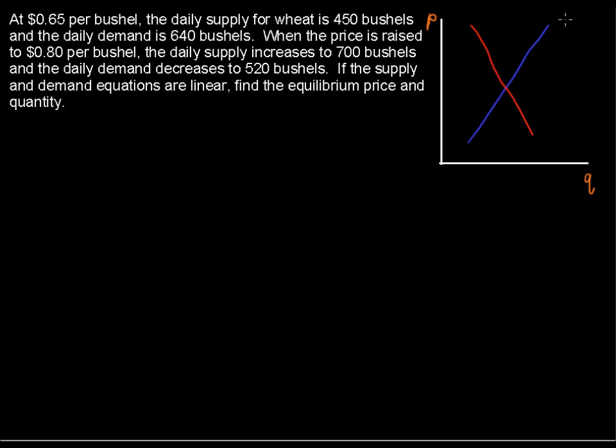So let's label these real quickly. We've got the supply line and the demand line. Sometimes they're called supply and demand curves because in reality they usually are curved, but for this example we're going to assume that they are linear equations. We've got Q on the x-axis and P on the y-axis.